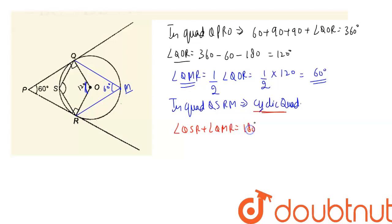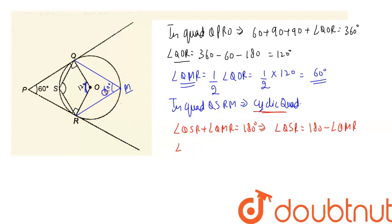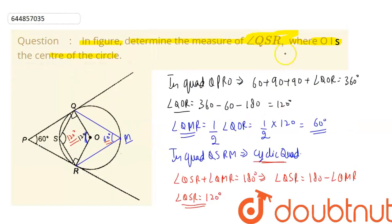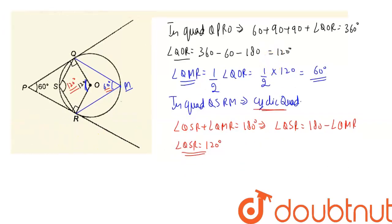From this we can find angle QSR. Angle QSR equals 180 minus angle QMR, and since angle QMR is 60 degrees, angle QSR equals 180 minus 60, which is 120 degrees. So the measure of angle QSR is 120 degrees. This is our solution. Thank you.